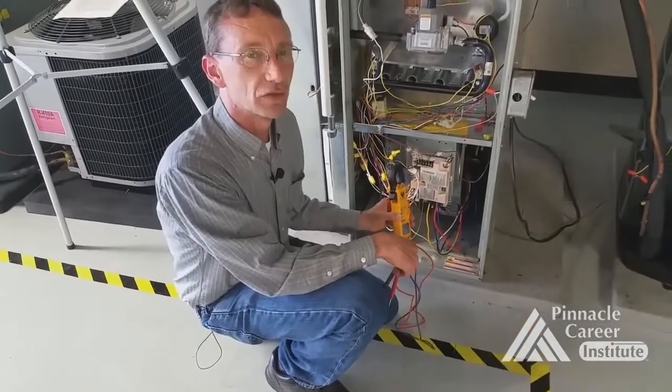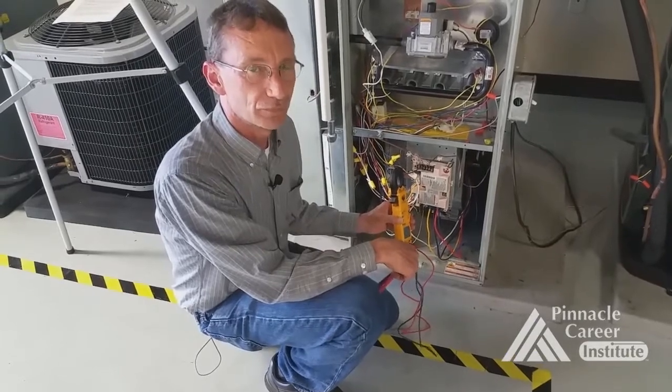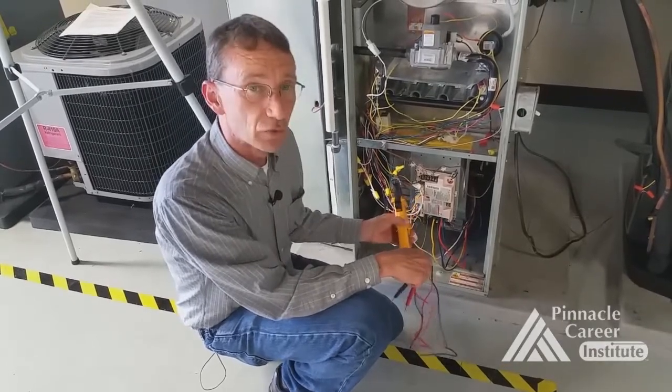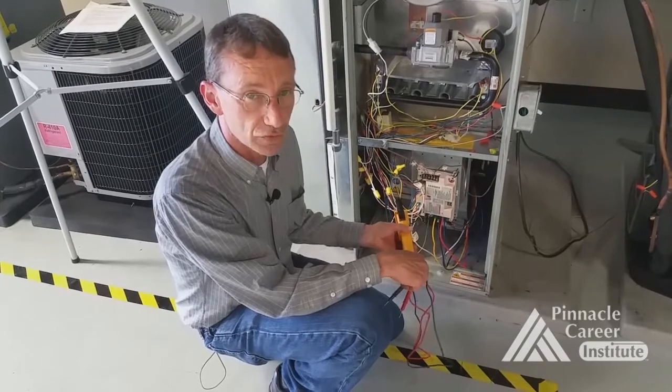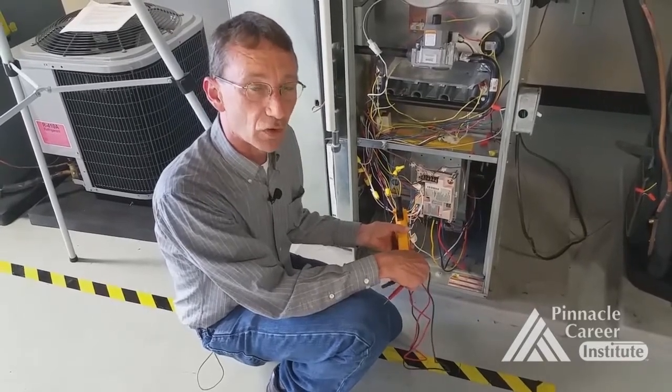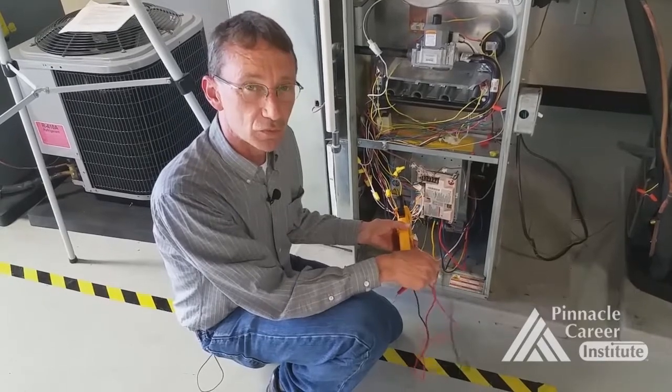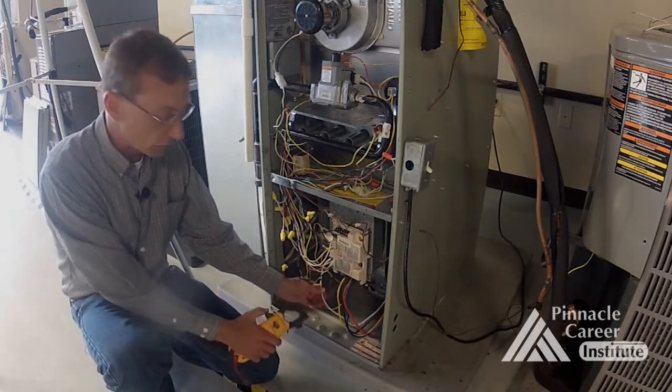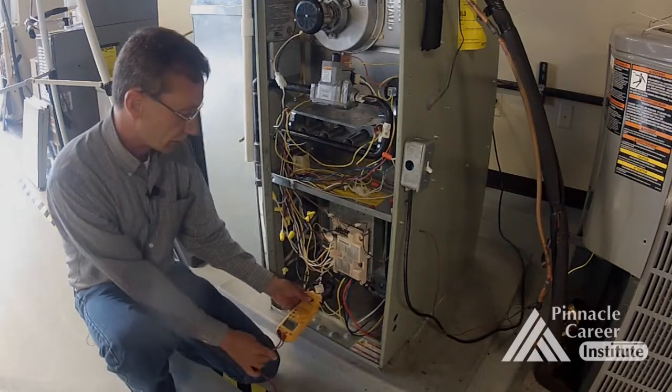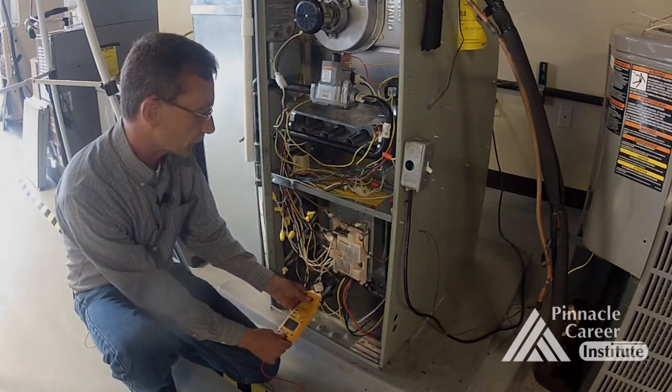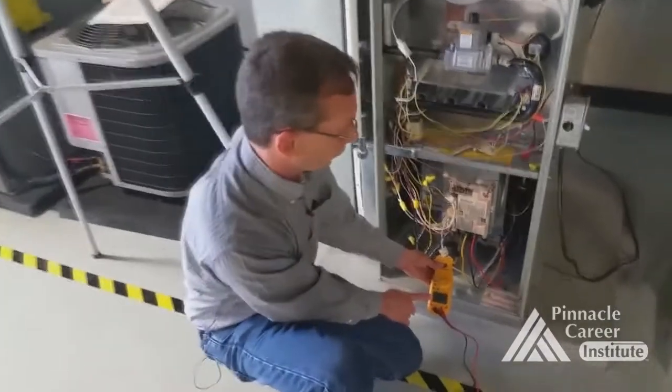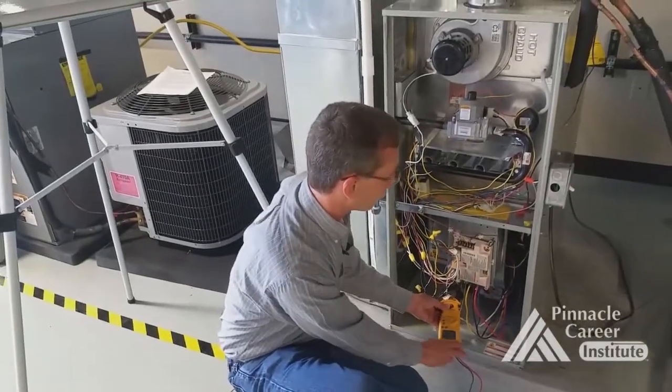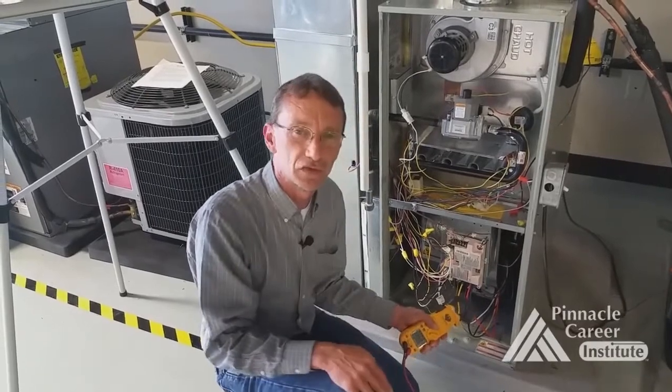Now we're going to approximate the load that the actual blower motor is adding to the temperature rise of the furnace. One simple way to do that is we can take the applied voltage, which in this case is 120 volts to the blower motor, and then we can take the amp draw. We know that volts times amps equals watts. I'm going to connect this to the common wire on the blower and clamp this around. Right now this is drawing just a little over five amps.